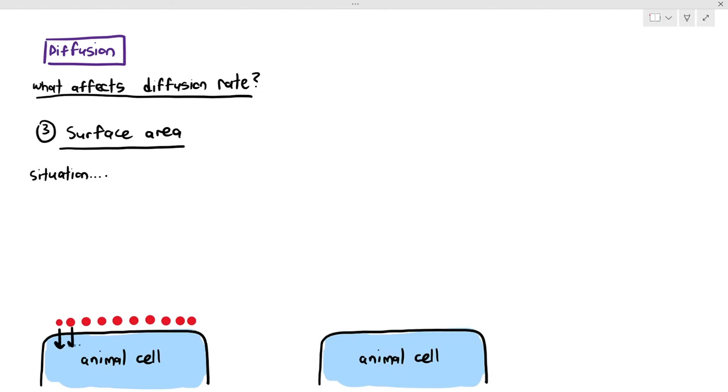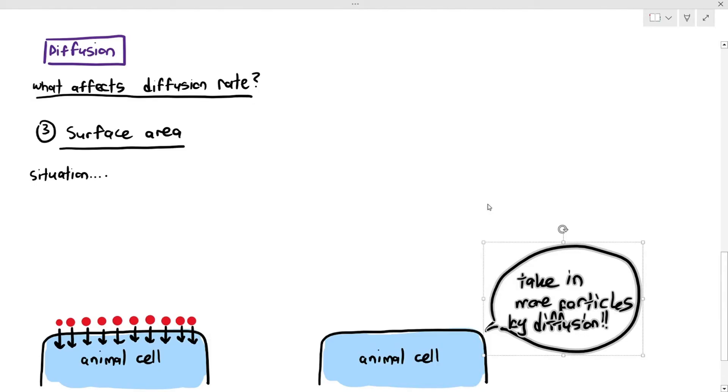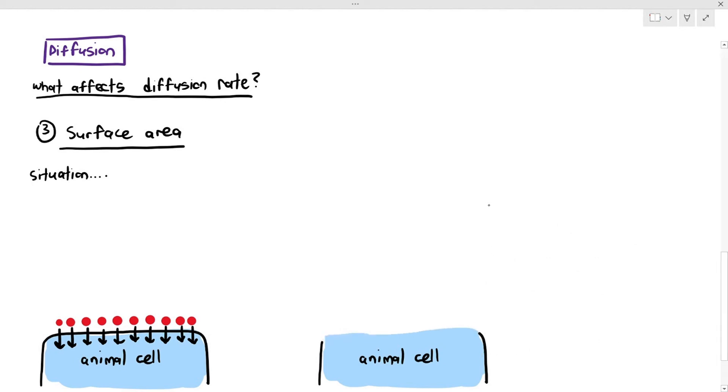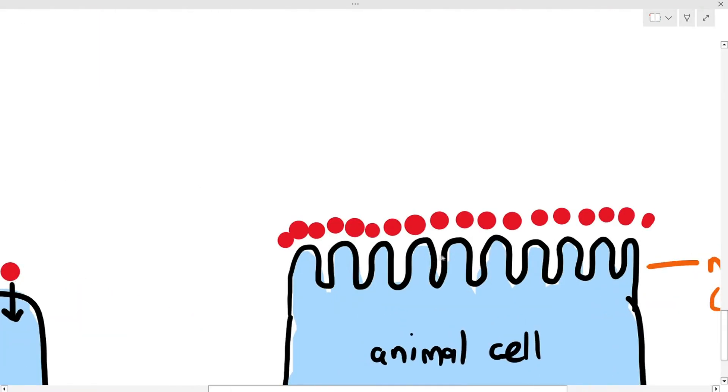The red-colored dots will be able to enter the animal cell by crossing the cell's surface membrane. But imagine the animal cell on the right. It wants to increase the amount of particles it can take in by diffusion. If it wants to increase the amount of particles it can take in by diffusion, what can happen is, the cell's surface membrane can fold and form something known as microvilli, which we have seen in chapter 1. And the function of the microvilli is to just increase the surface area of the cell's surface membrane.